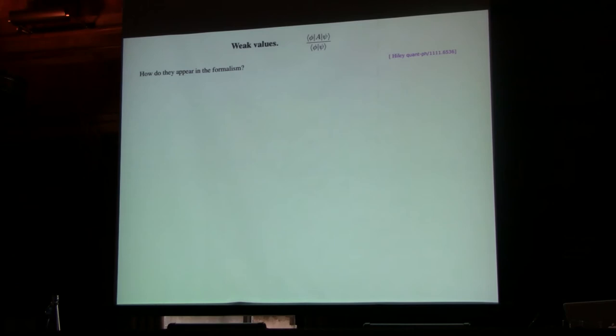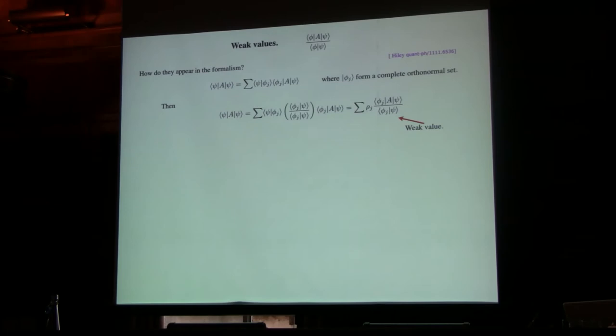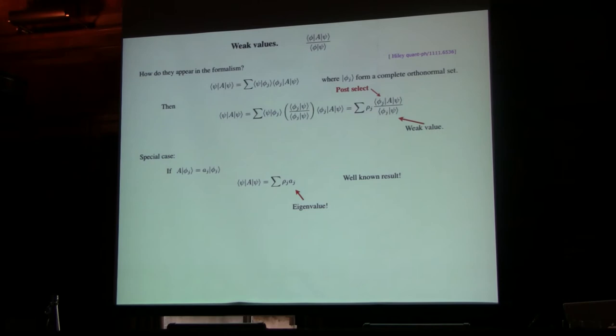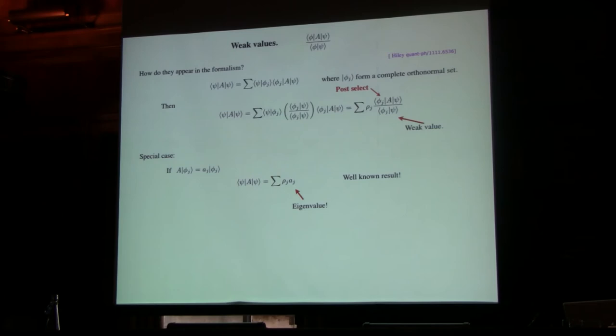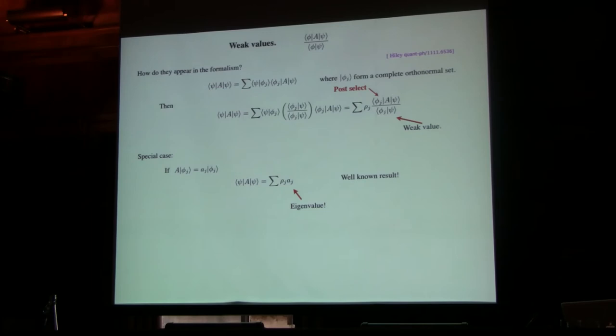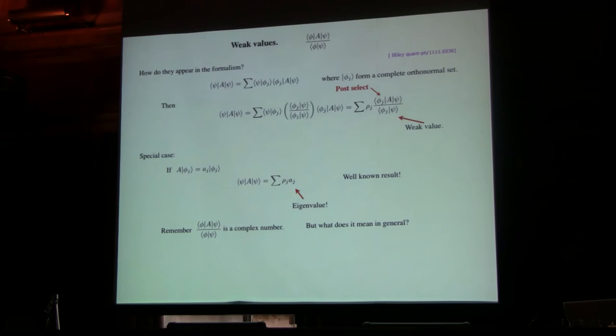Let's have a look then and see how they appear in the formalism. And it's very easy actually, take your normal expectation value and just expand it first of all in terms of complete orthonormal set. And then multiply by unity, you then take this part underneath there, there's your weak value. And so you see a weak value is just a term in the expansion of the expectation value. So there's nothing magical about it at all. And what you do is you post-select with this phi_j, and that will give you a value at a particular point in your space. Now the special case of that is the very simple case where this weak value is just the only value. And that's when you choose the complete set of eigenfunctions of your operator A. And remember, this is a complex number.